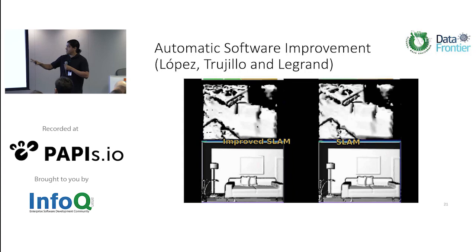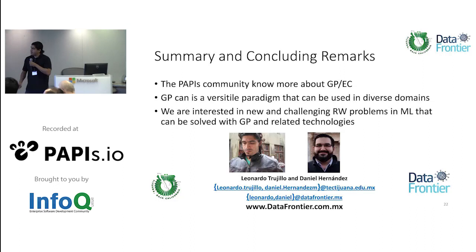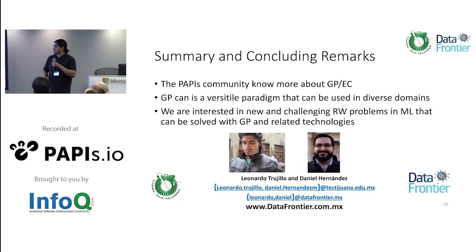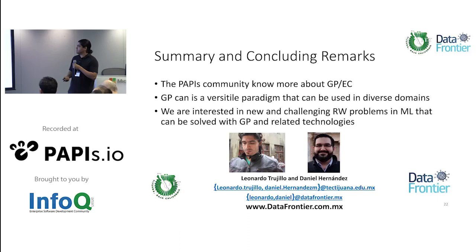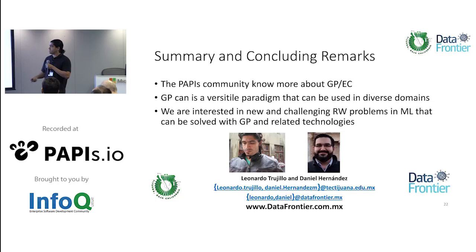I'm close to the time limit. Our goal for this talk was for the POPIS community to know more about GP and evolutionary computation. We want to make sure you know that GP is a very versatile paradigm. Commercially it's being used for regression, classification, and automatic modeling, while in academia it's been used to evolve quantum computing algorithms and to do automatic software improvement without any human intervention. We are interested in new and challenging real-world problems in machine learning and trying to solve those with GP. Thank you.